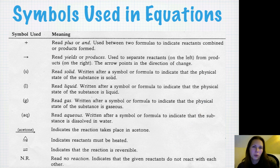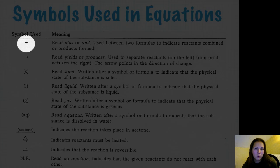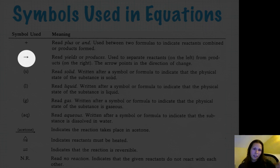I wanted to take a second to discuss with you guys the symbols used in equations. You need to write these down. So make sure you pause and write down at least the symbols. You don't have to write down these detailed descriptions of them. I'll talk about them for a little bit. But you need to understand what all of these mean. So the plus is read as plus or and. And it's indicating reactants that combine or products that combine on the other side of the arrow. Which the arrow means yields or produces. So you're separating the reactants, the things that you react and put together, from the products on the other side. The arrow points in the direction of the change.